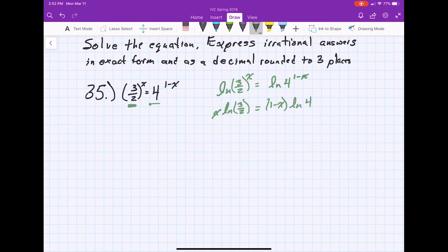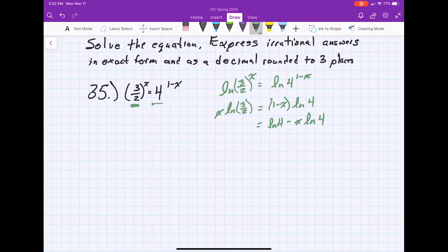Now we can break up this side a little bit further. So we have ln 4 minus x ln 4. And then of course on the other side we just still have the x ln 3 over 2.